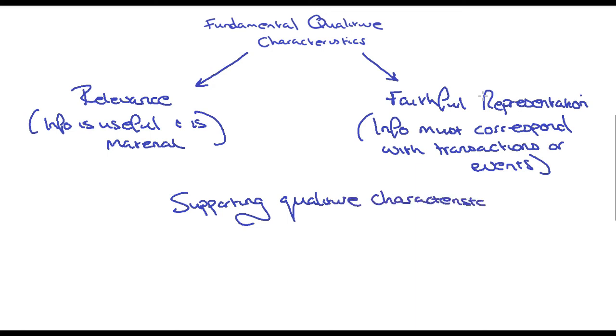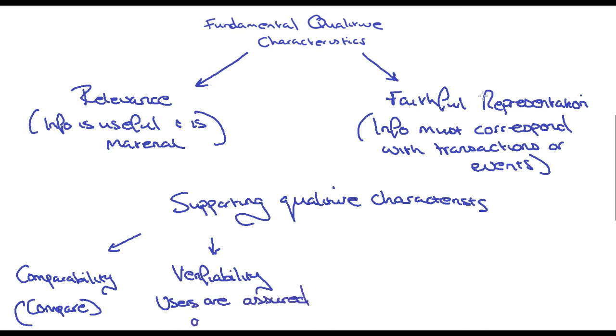Now if this is your first time coming across the word qualitative, all it means is basically something that can be measured. So we have comparability. So if you can remember this as being compare. So users can compare information with previous years and other businesses. Then we've got verifiability. So that users are assured, they feel comfortable of that information. Then we've got timeliness. So the information is received in time for users to make a decision.